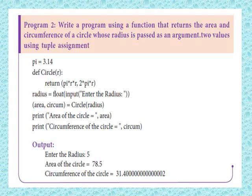The function is defined using def, and the function name is 'circle' with radius r as the argument. Inside: area = pi * r * r, circumference = 2 * pi * r. Return both values. Then get the radius using: radius = float(input('Enter the radius')).